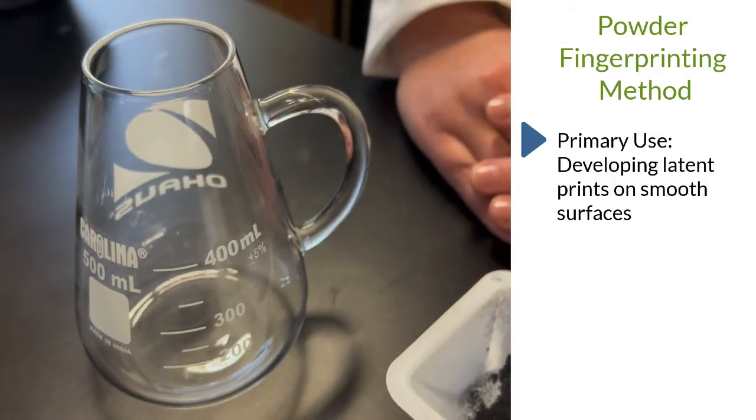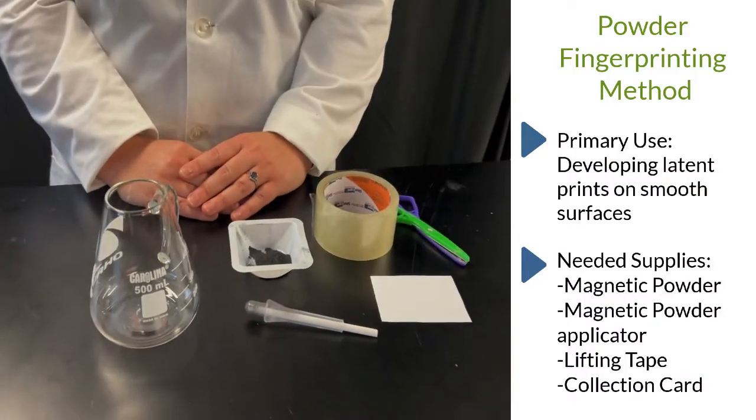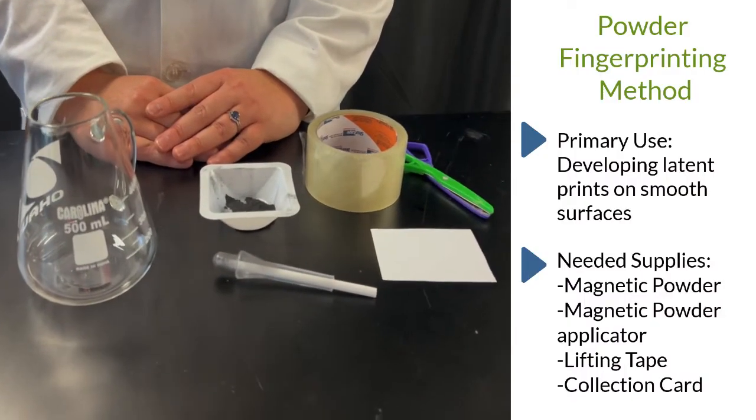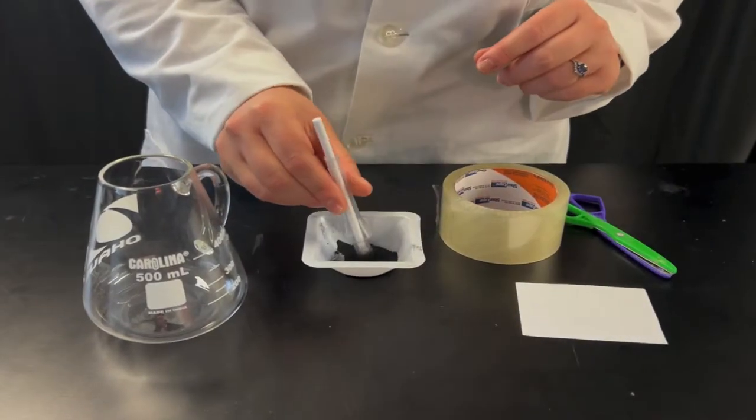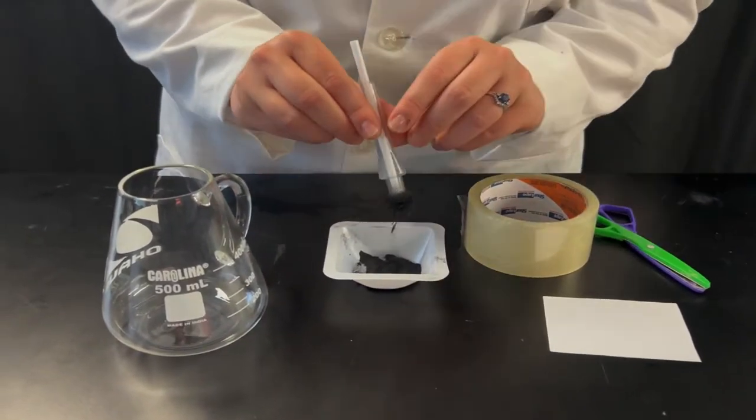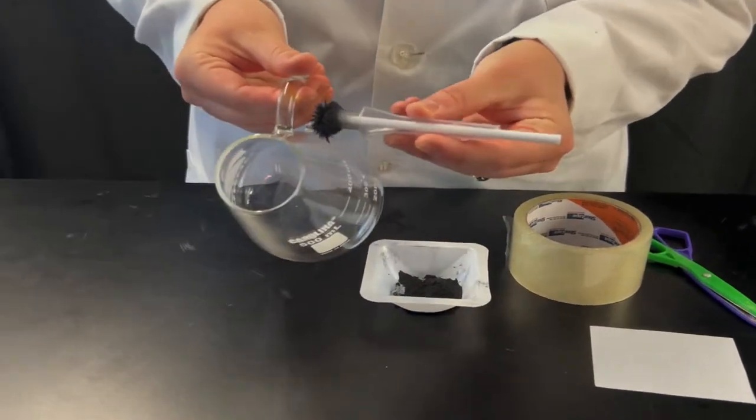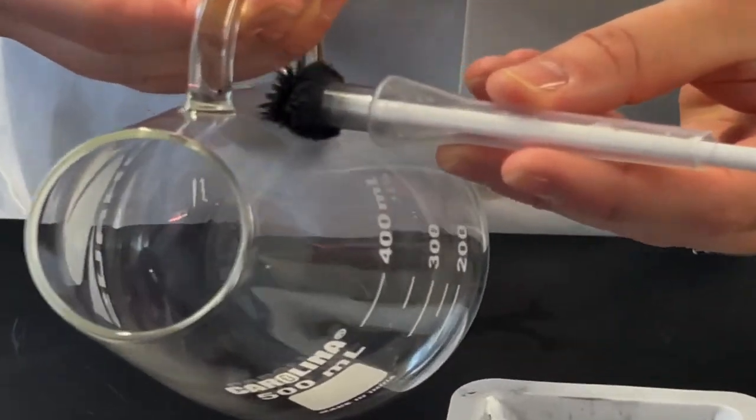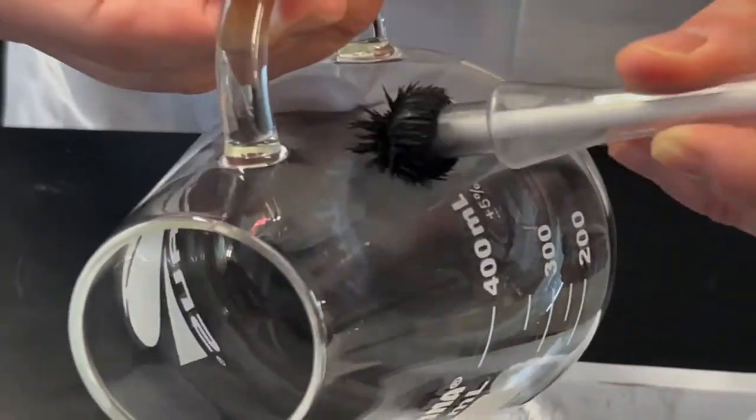To develop fingerprints with powders, you will need magnetic powder, a magnetic powder applicator, fingerprint lifting tape, and a collection card. To develop latent prints with powders, first obtain a magnetic powder applicator and draw a plume of magnetic powder. Now obtain your specimen with suspected prints and carefully sweep the powder over the surface. If latent prints are present, they will begin to become visible as they pick up the powder.